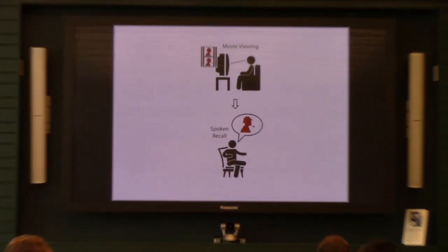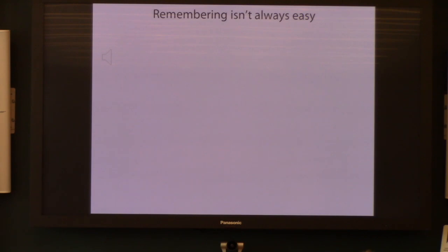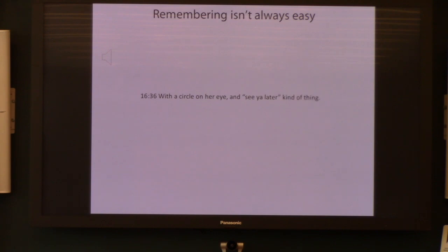Now for the last section. I told you about imperfect reinstatement where the memory pattern has been changed from the perception pattern in a potentially useful way. There's another way reinstatement is imperfect that's maybe more obvious: remembering what you've seen and reporting it is not always easy. I'll play a demo from the Film Festival recall — this is one of the longer search periods, but almost everybody has a couple of trials like this.